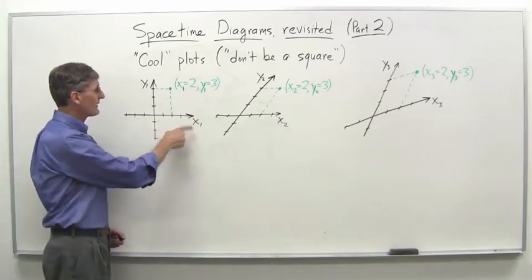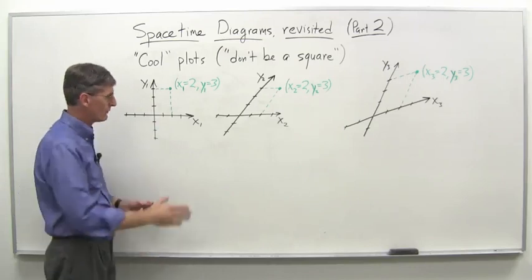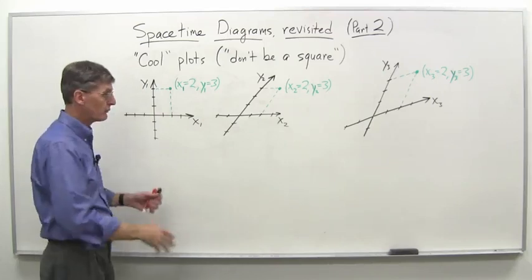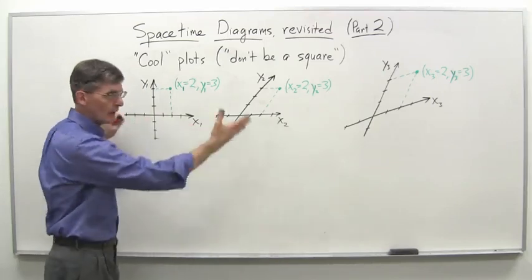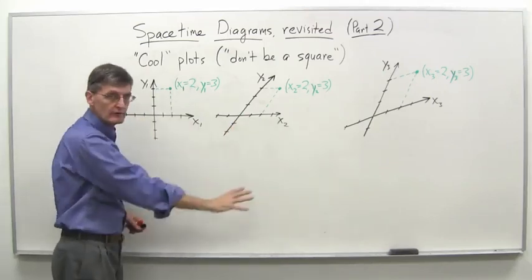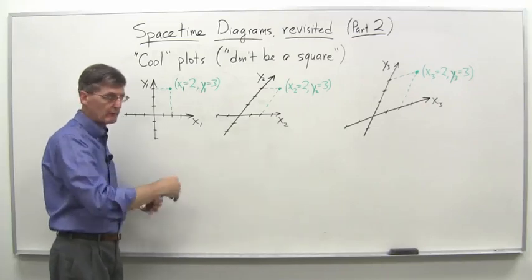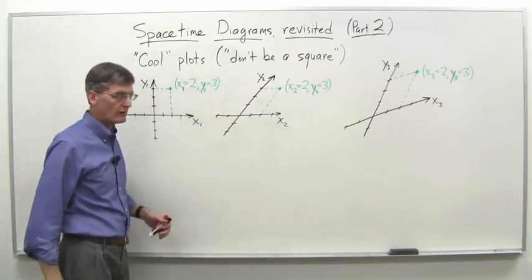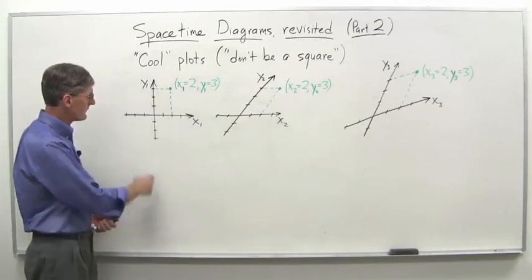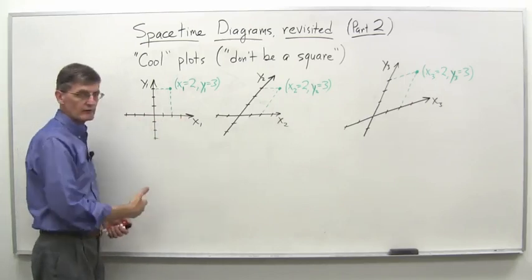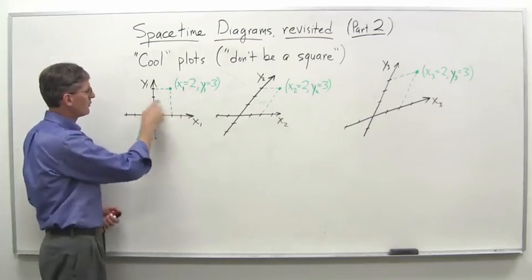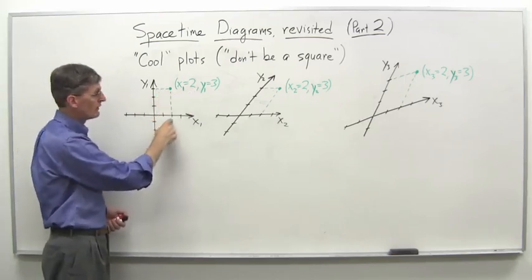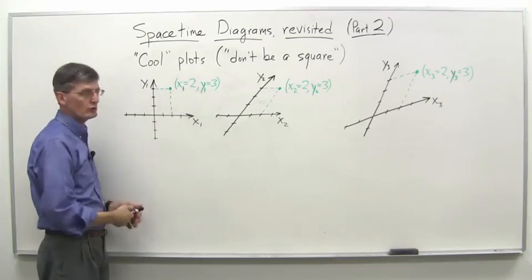So here's our normal x-y plot to start off with. We've got two dimensions: x-axis and y-axis. You could imagine a field or a whiteboard where we want to plot points — maybe a surveyor marking locations of various things on a flat surface. Clearly we have our scale on here, so this is x1, y1 for this set of axes. This point here is x1 equals 2, y1 equals 3 — the point (2, 3) there.